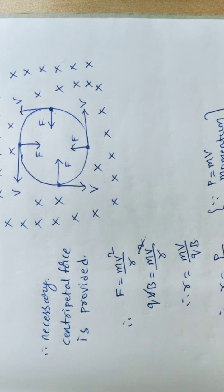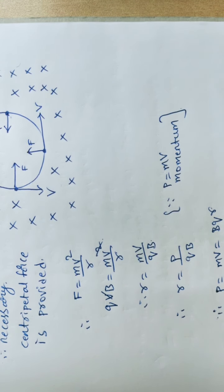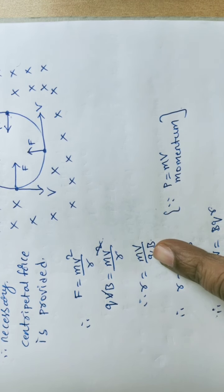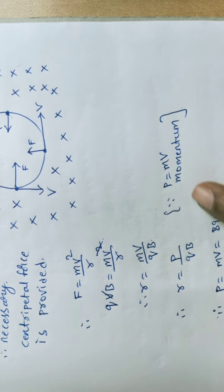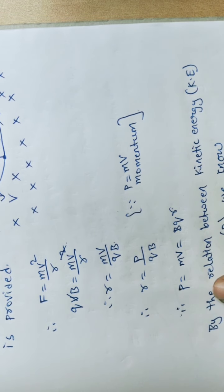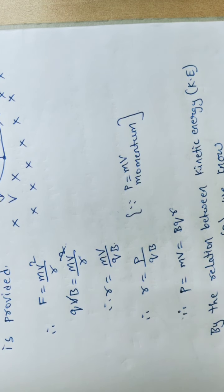Here M is the mass and V is the velocity of the charged particle. Their product MV is momentum P. So radius R can also be written as R = P/QB, giving us the momentum relation P = MV = BQR. Also, from the work-energy chapter, kinetic energy KE = P²/2M, so substituting P = BQR, we get KE = B²Q²R²/2M.